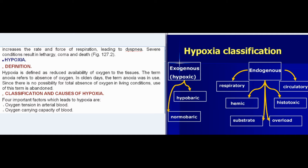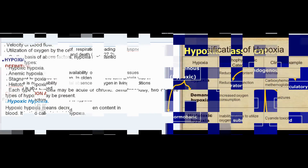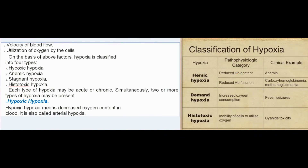Four important factors which lead to hypoxia are: oxygen tension in arterial blood, oxygen-carrying capacity of blood, velocity of blood flow, and utilization of oxygen by the cells. On the basis of these factors, hypoxia is classified into four types: hypoxic hypoxia, anemic hypoxia, stagnant hypoxia, and histotoxic hypoxia. Each type may be acute or chronic, and two or more types may be present simultaneously.